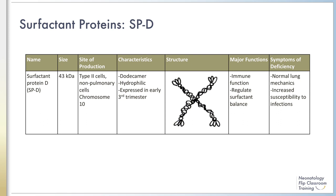Surfactant protein D is found mostly in type 2 cells as well as non-pulmonary cells. Like surfactant protein A, the genes for surfactant protein D are coded on chromosome 10. Surfactant protein D plays a major role in immune function by acting during agglutination, opsonization, and modulation of inflammation.